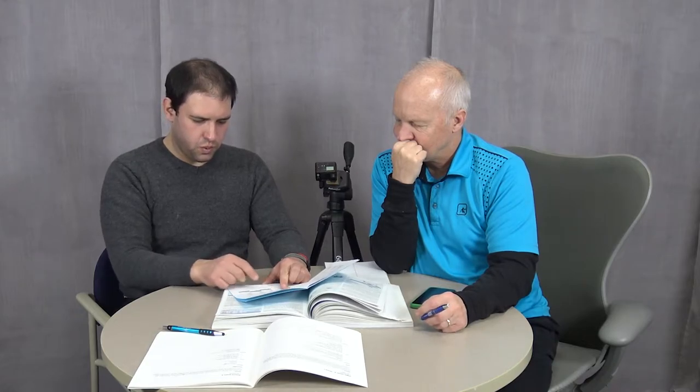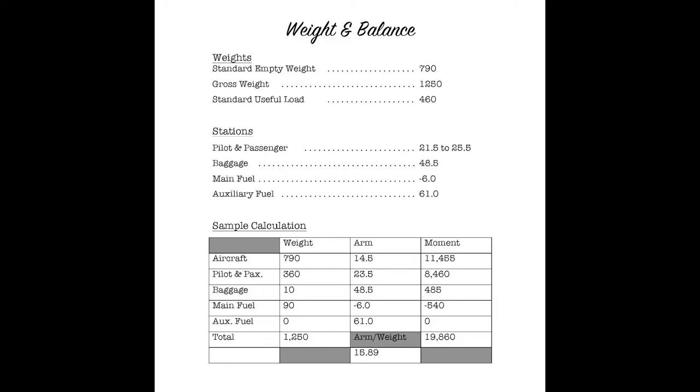In this example, we have arms calculated for each component of the weight, and the moments are already calculated. For the pilot and passenger in this example, the arm is 23.5. So that's where we're sitting on the seat in the Chief.